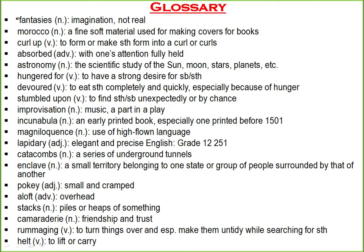Glossary terms from the essay: Fantasy means imagination. Morocco is a fine soft material used for making covers of books. Coil off means to form or make something into a coil. Absorbed means with one's attention fully held. Astronomy is the scientific study of the sun, moon and stars. Hungered for means to have a strong desire for something. Devoured means to eat something completely and quickly. Stumbled upon means to find something by chance.